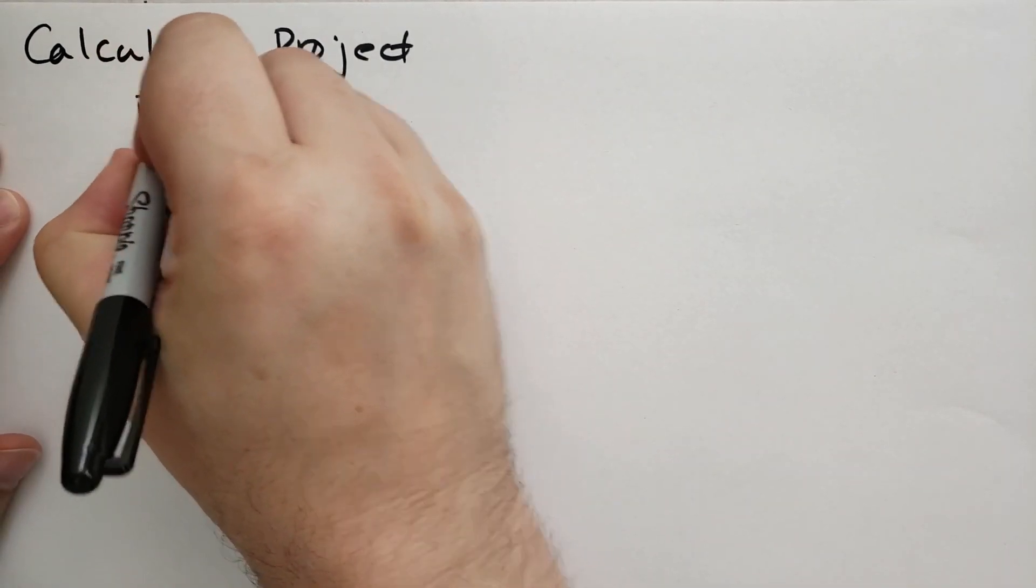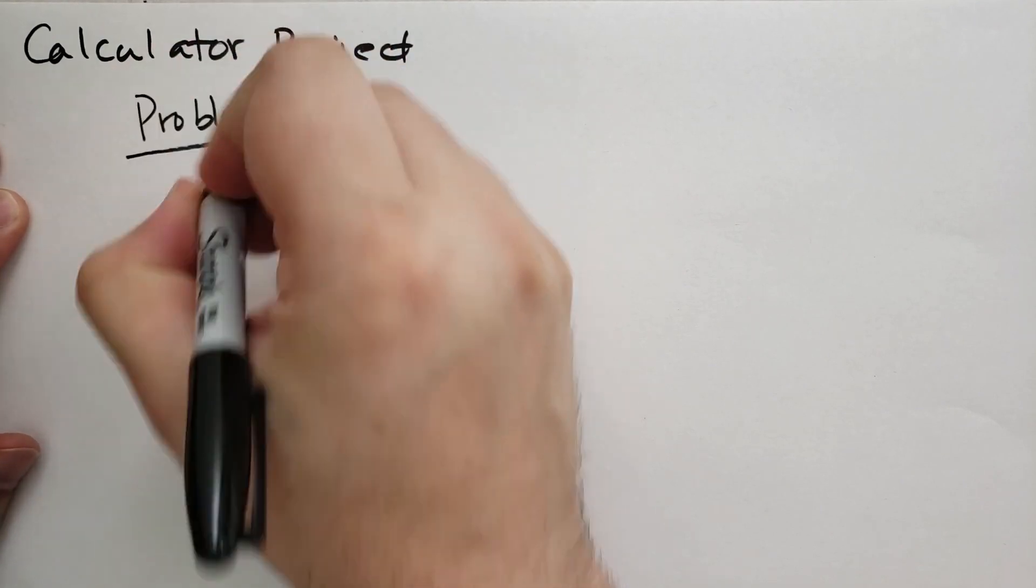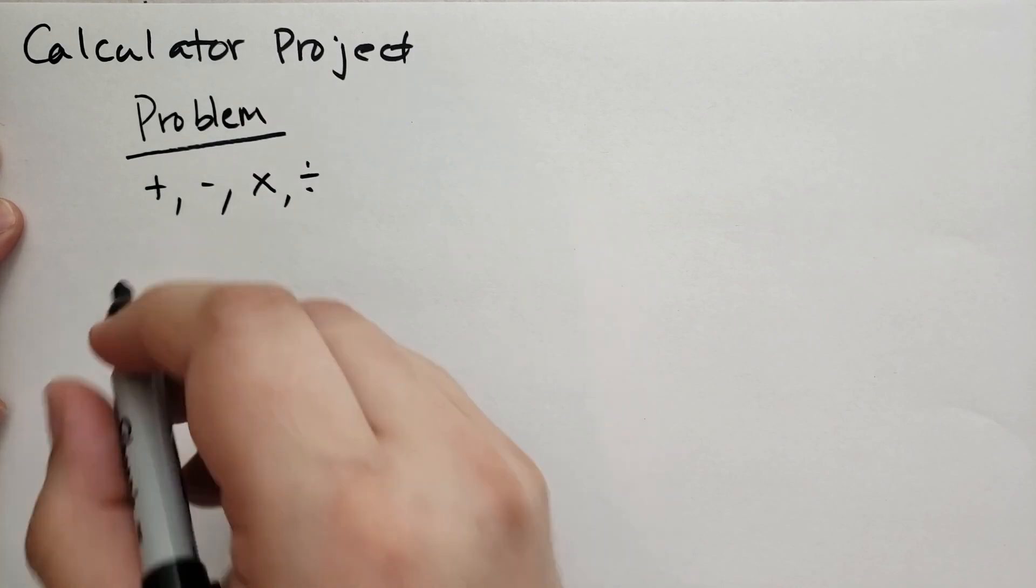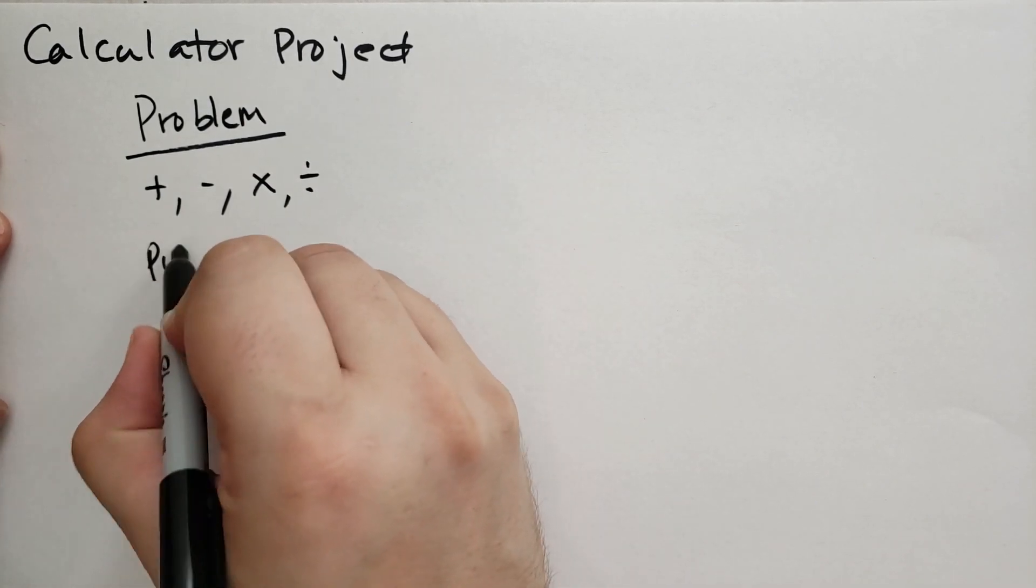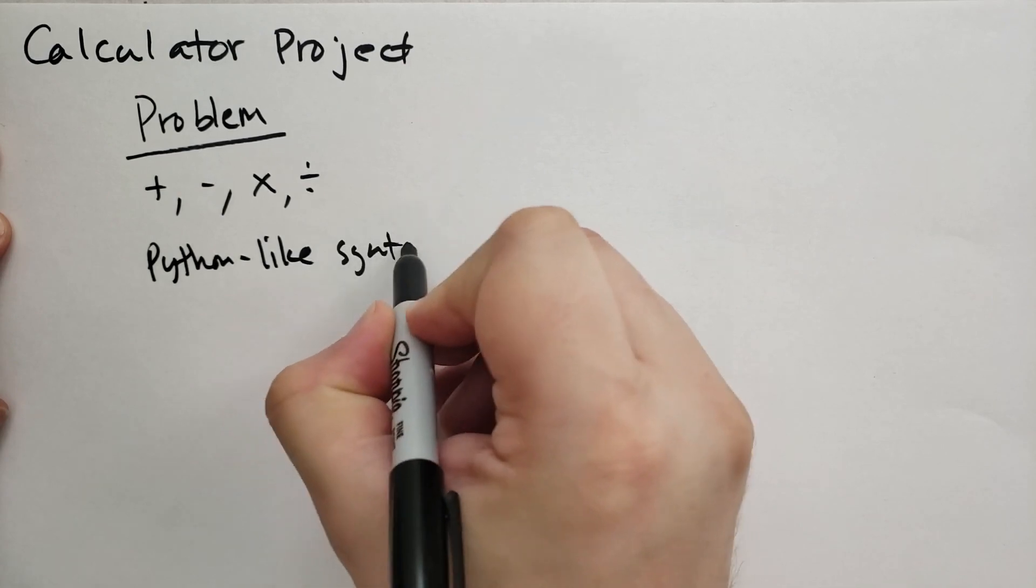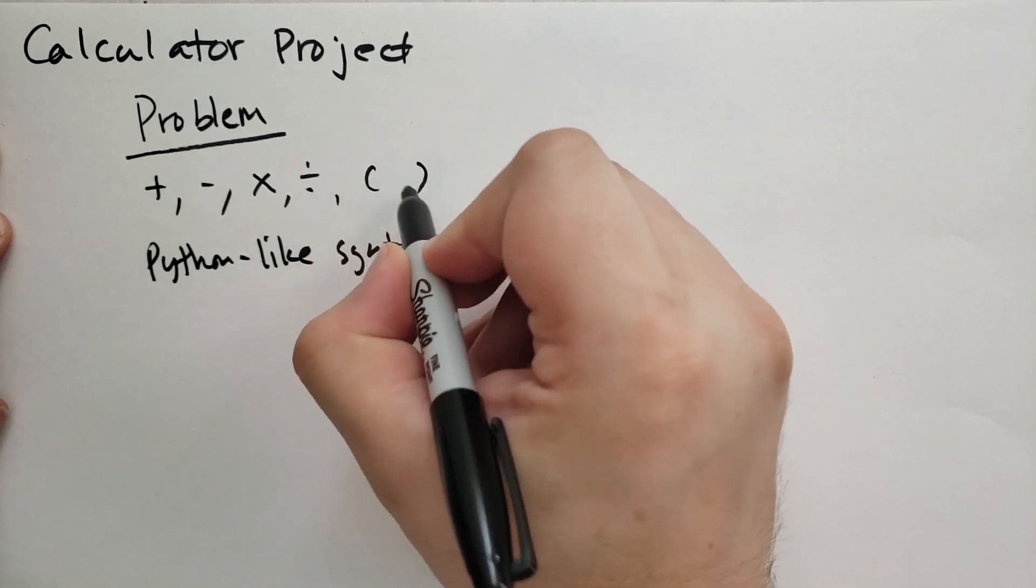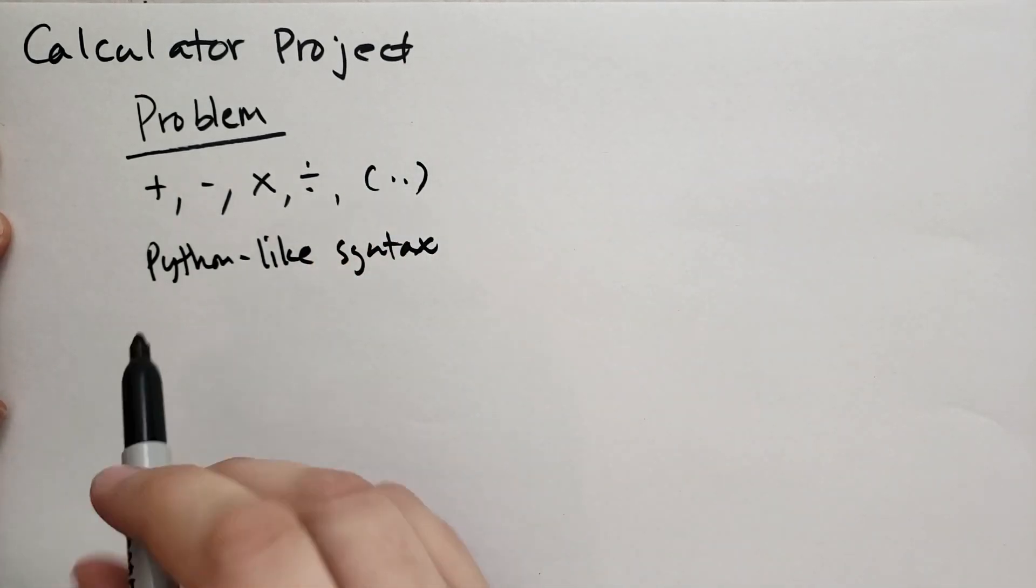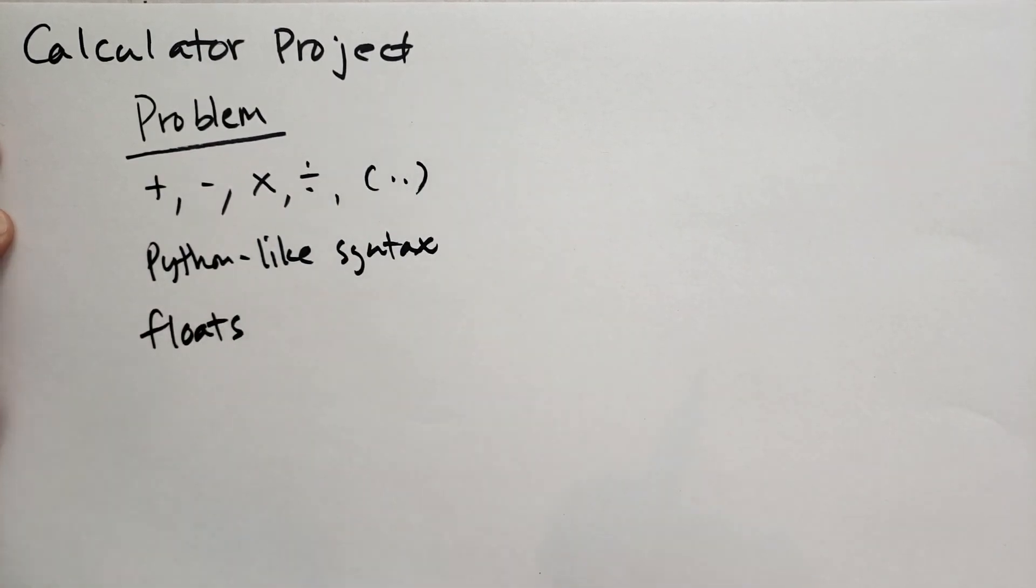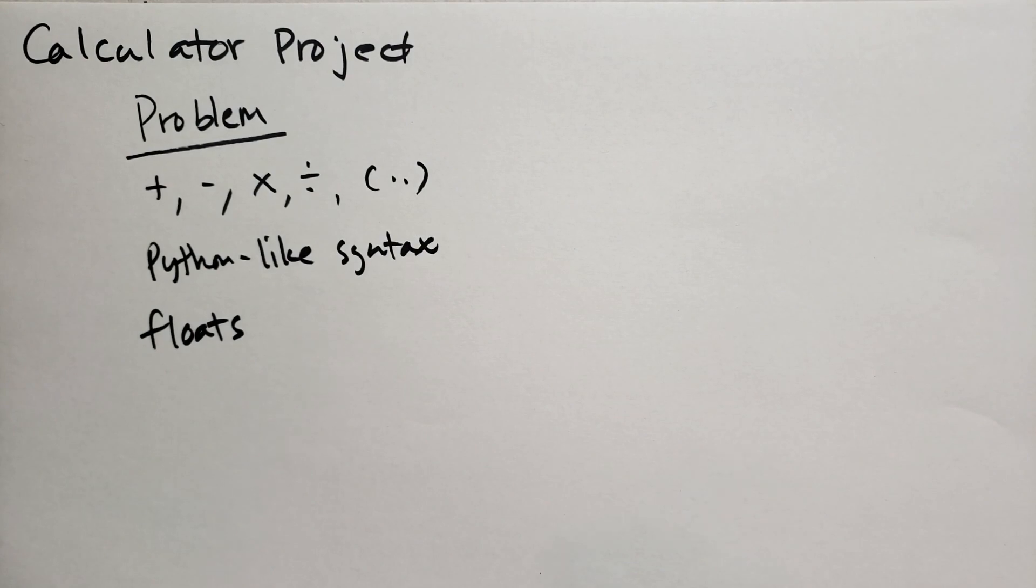The problem that I've decided on is we're going to do addition, subtraction, multiplication, and division using a Python-like syntax. We're also going to have parentheses so you can put stuff in parentheses. The numbers will all be floats - we won't use integers at all. We're not going to use rational numbers, just floats, although it would be interesting to use rational numbers.